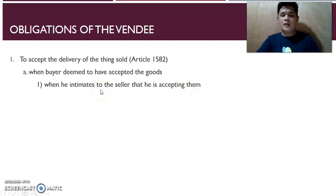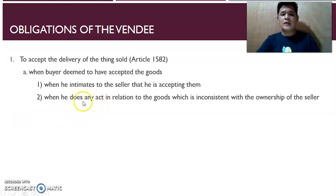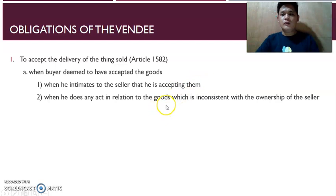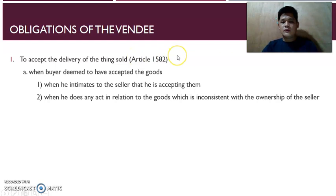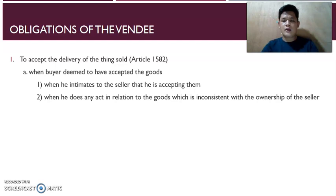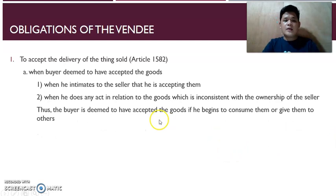Number two: when the buyer does any act in relation to the goods which is inconsistent with the ownership of the seller. For example, if the goods are perishable — like food — and the buyer had no objection during the time of delivery by the seller, but he took the goods from the possession of the seller, that is tantamount to acceptance.